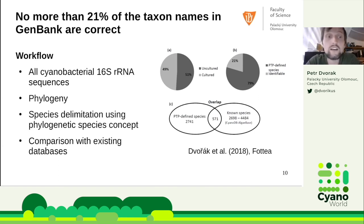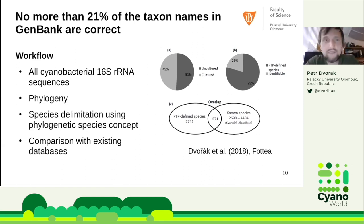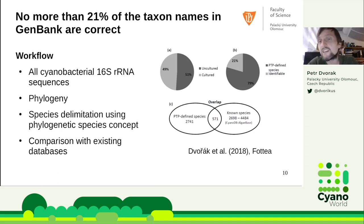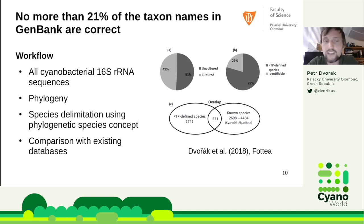We delimited species using a phylogenetic species concept. GenBank is full of very similar sequences, and if they are all the same they can be considered as one species, so we clumped them into putative species clades. We then checked if those putative species correspond to existing named species in two databases: CyanoDB and AlgaeBase, the latter having more than 5,000 species. We found overlap in only 21% of those, confirming that in GenBank it is very hard to find correctly identified sequences.